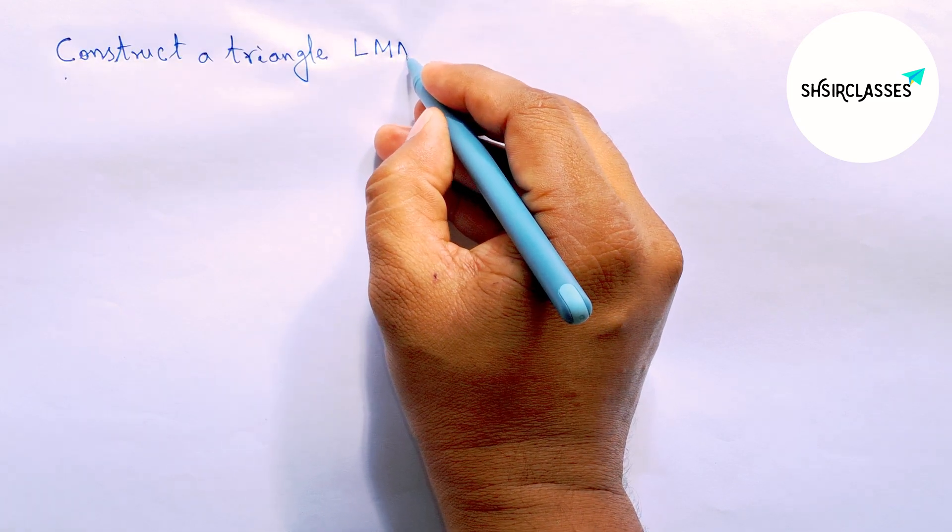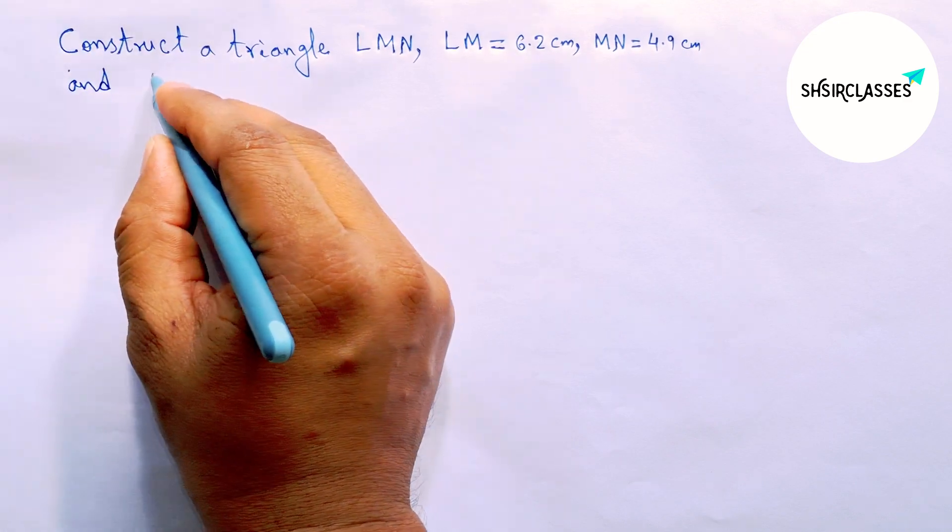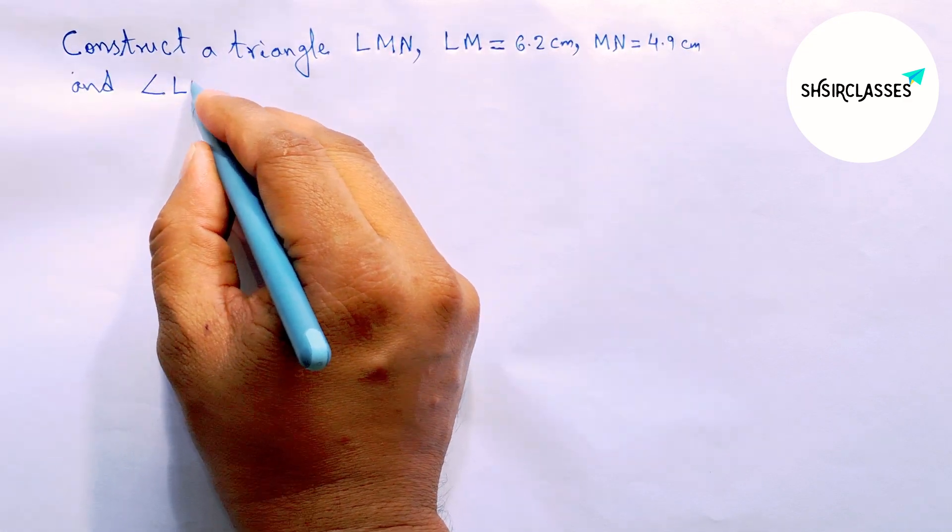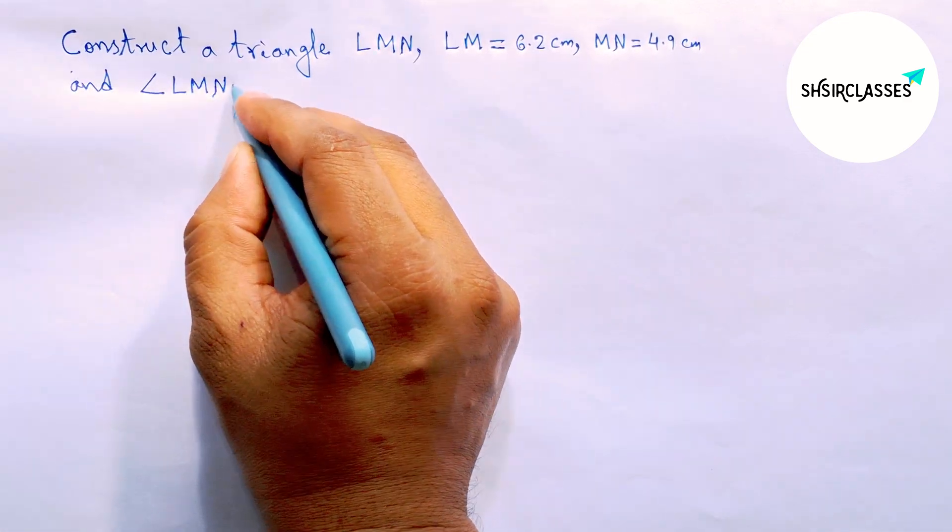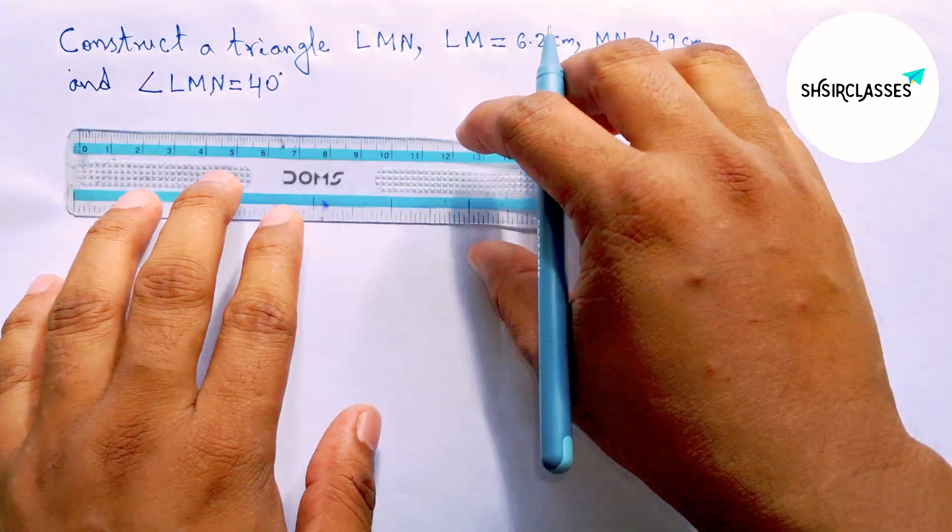MN equals 4.9 centimeters, and angle LMN equals 40 degrees. So let's start the video.